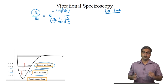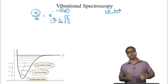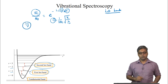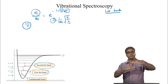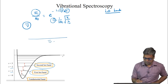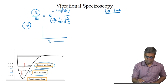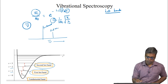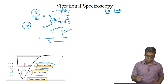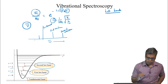If everything were harmonic, all energy levels would be spaced by the same frequency nu-bar. However, because of anharmonicity the energy levels come closer and closer. This means a hot band appears at a smaller wave number and with smaller intensity compared to the fundamental transition.